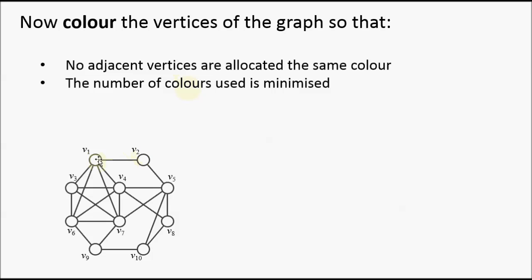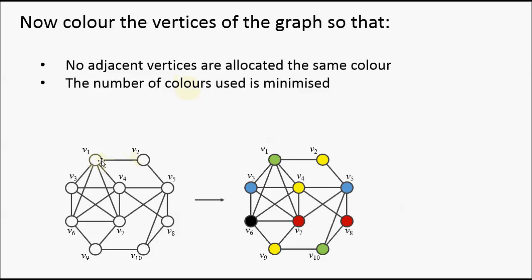So here is an example solution to the graph on the left. You can see it's using five colors. These three are painted yellow, these are painted red, and so on.